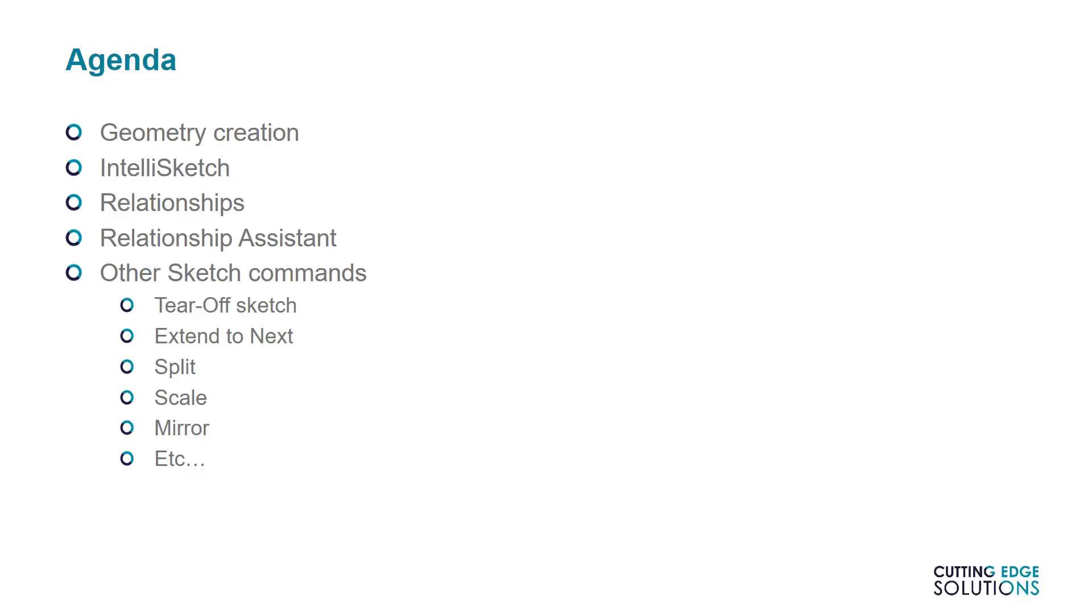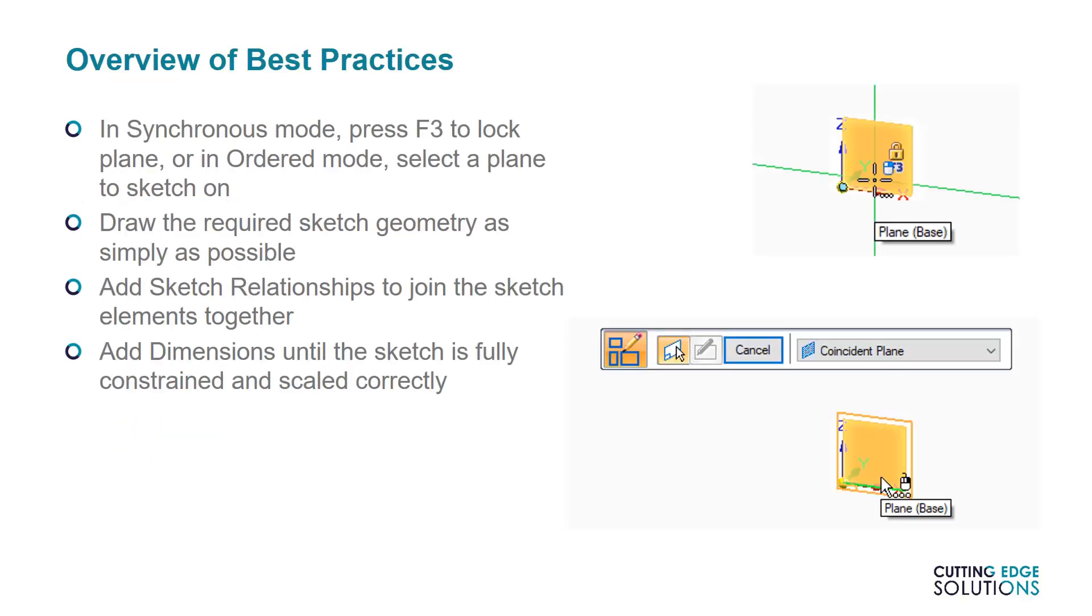So to start off, what are the advised best practices when creating a sketch in Solid Edge? First things first, you need to know where you're sketching before you start. If you're in synchronous mode, that means we advise locking onto a plane by moving your mouse over it and pressing F3. In ordered mode, it means be careful when specifying a plane to sketch on. It may be useful to create a plane and then sketch, instead of creating a sketch plane in the sketch command.